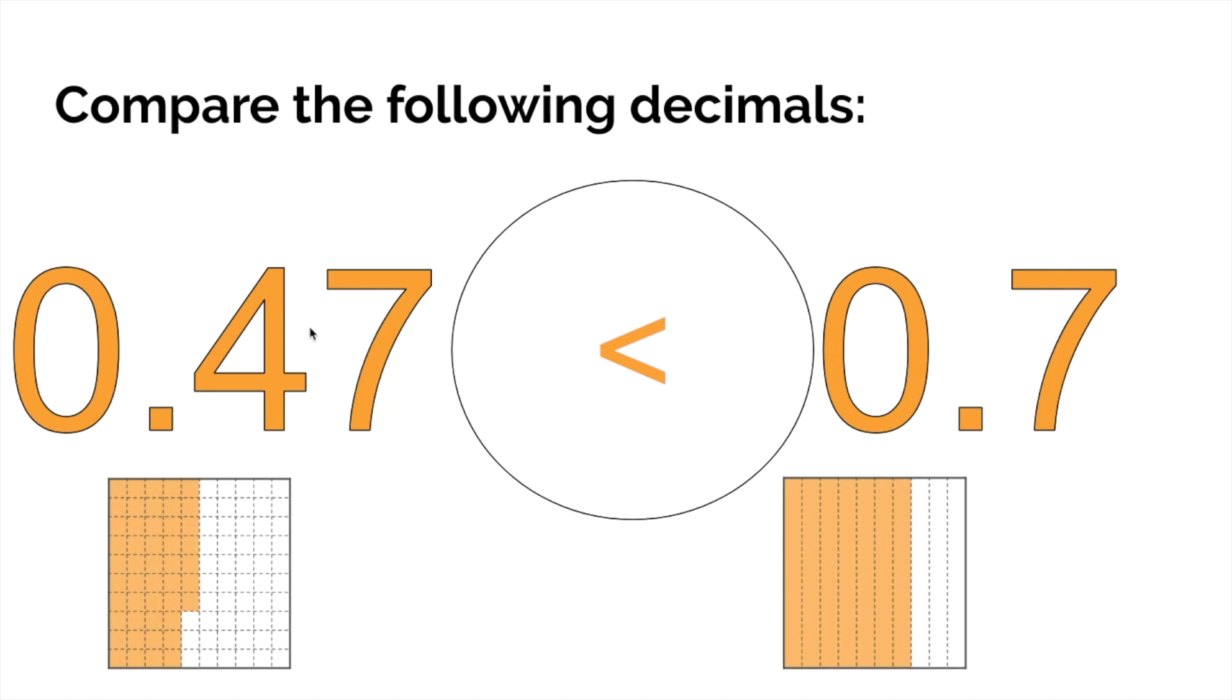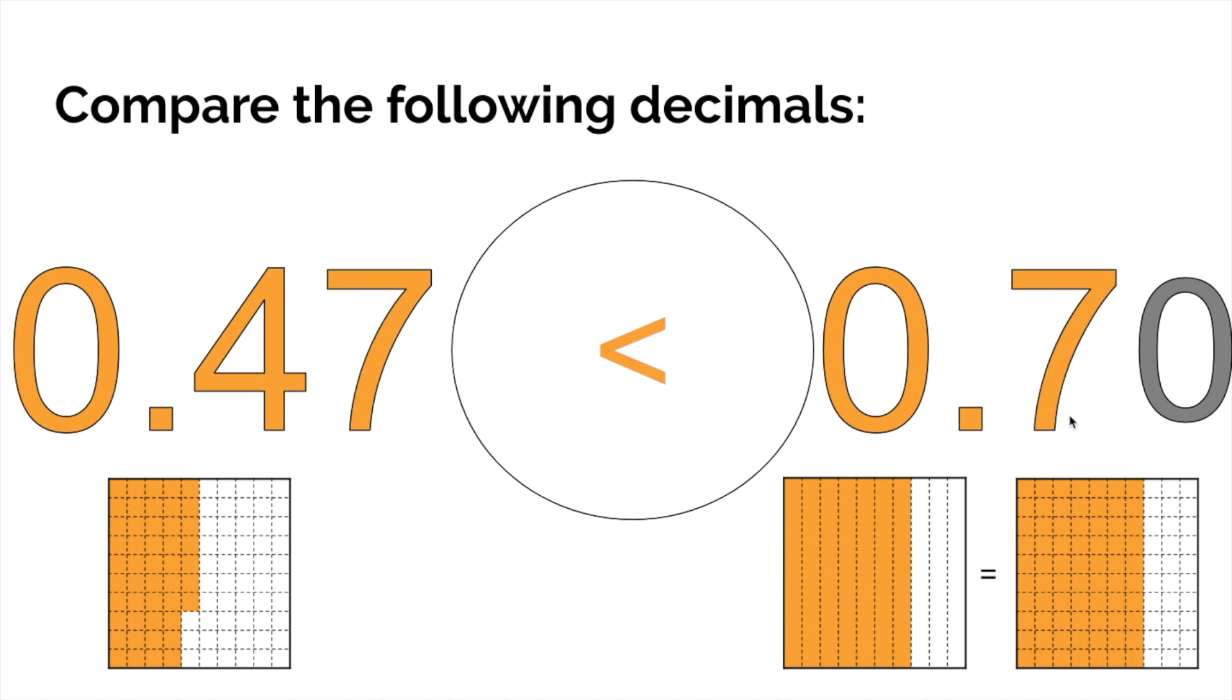Seven tenths is bigger than four tenths, which means forty-seven hundredths is less than seven tenths. If it helps you, you can say, oh, there's nothing here in the hundredths place so that's zero hundredths, so that's seventy hundredths is bigger than forty-seven hundredths. Now you're like, oh, oh yeah, yeah, yeah, you're right, 70 is bigger than 47. Uh-huh, that's what I thought.